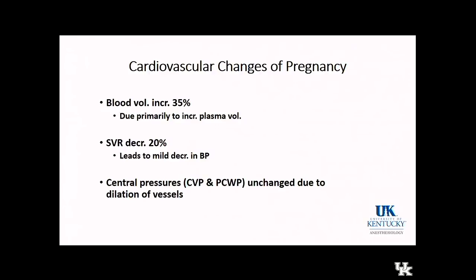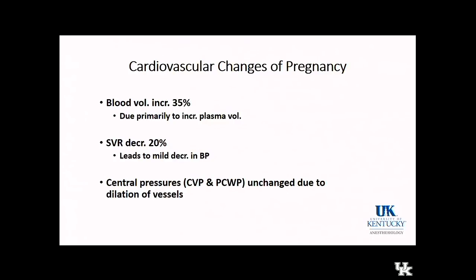Other cardiovascular changes include a significant increase in blood volume by about 35%, predominantly due to an increase in plasma volume, and a small decrease in SVR of about 20%. Earlier in pregnancy, you can see mild decreases in blood pressure compared to baseline. Despite the increase in blood volume, you also have vasodilation, so you should not see changes in central pressures. Elevated pulmonary artery pressures or CVP are abnormal.